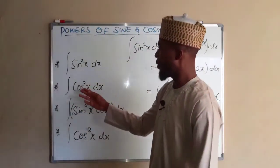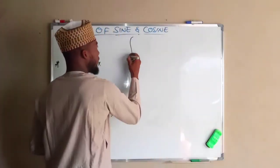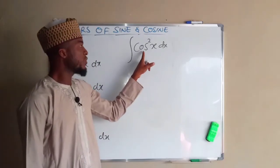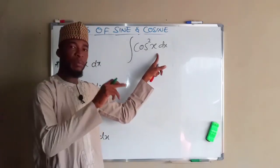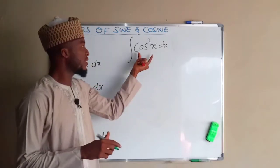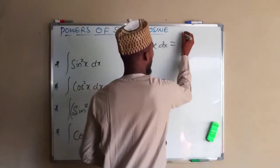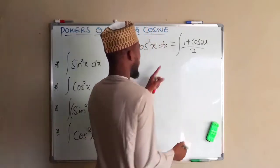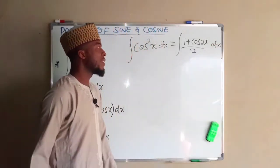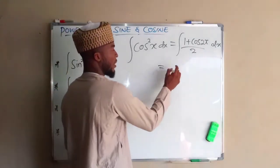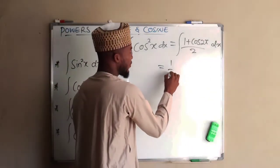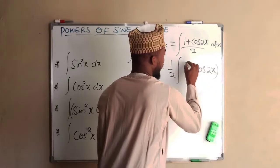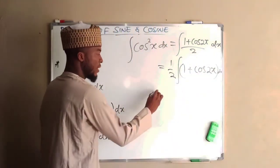Now let us look at the second one, which is the integral of cos squared X with respect to X. From the double angle identity, cos squared X can be written as (1 plus cos 2x) divided by 2. So instead of this, let us factorize 1 over 2 outside.